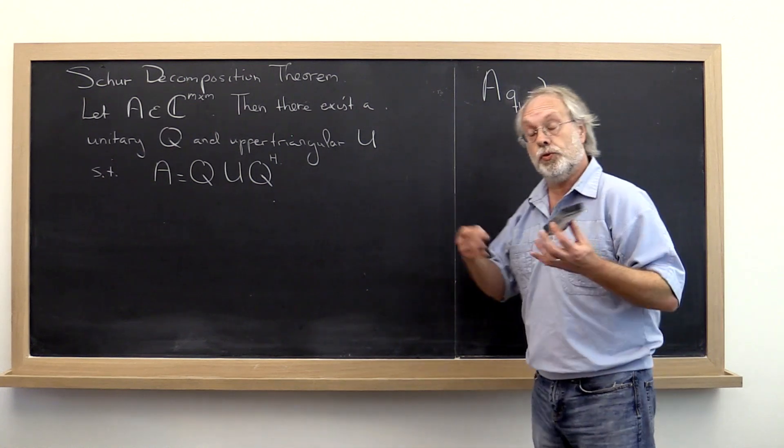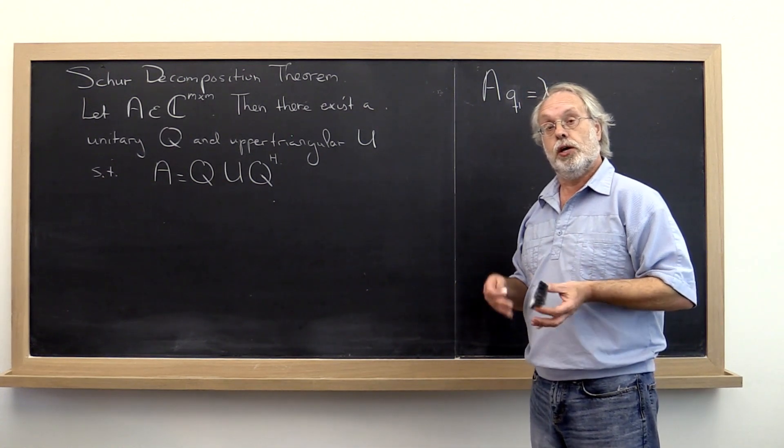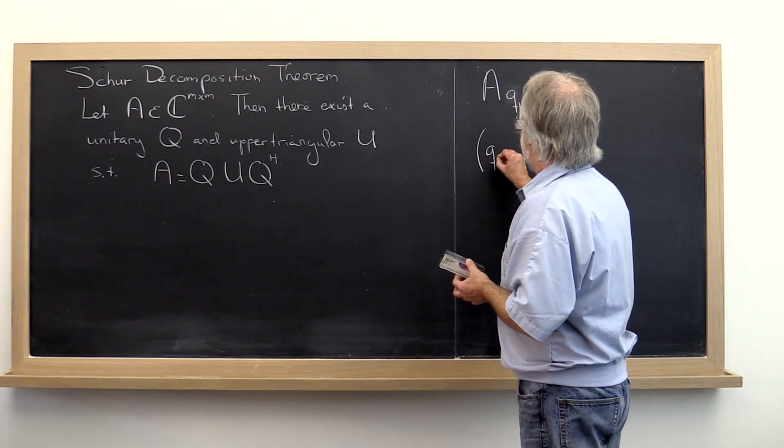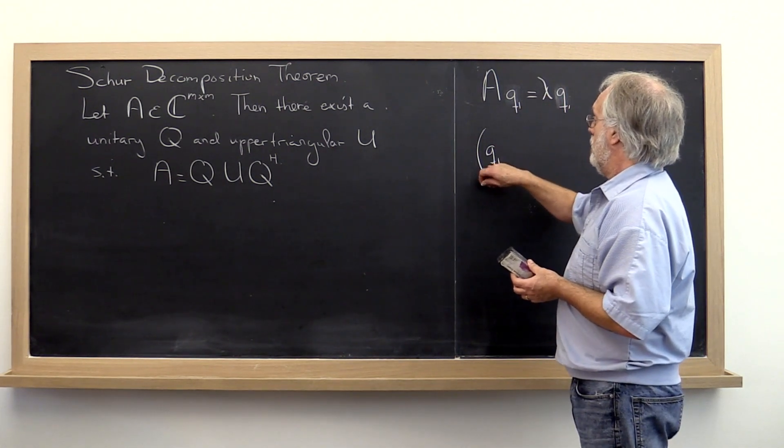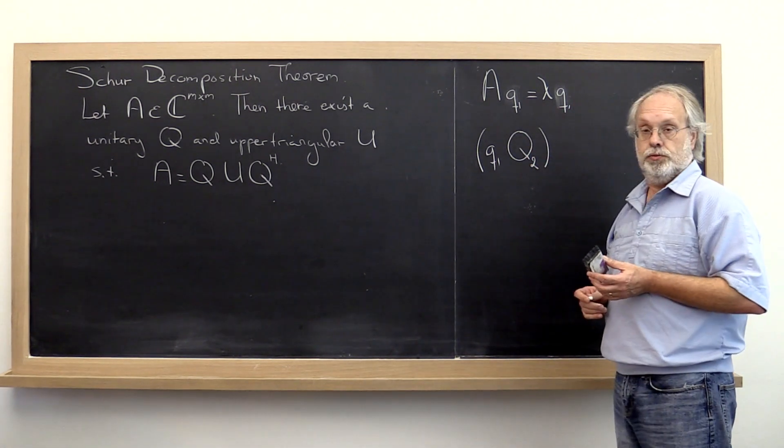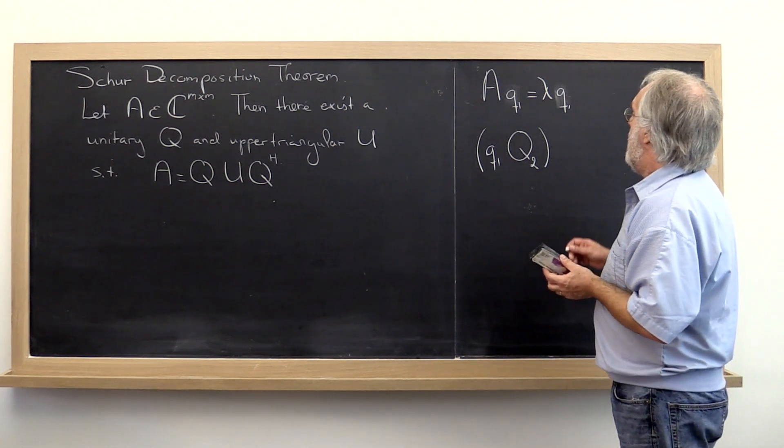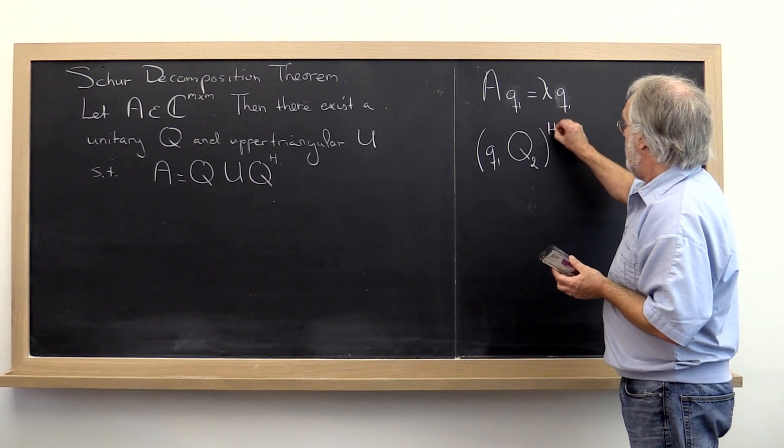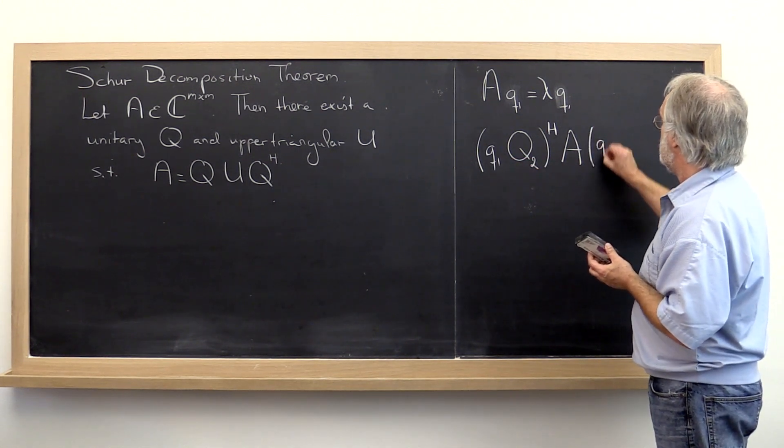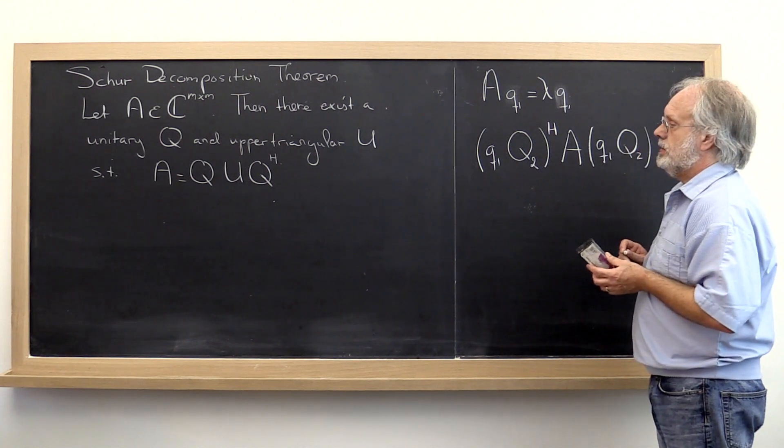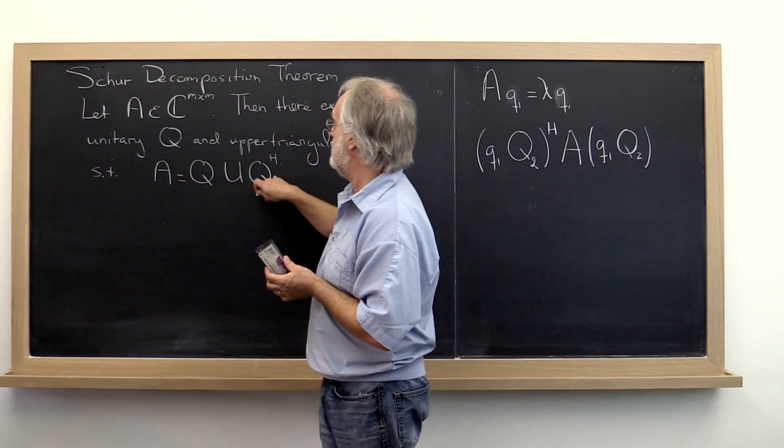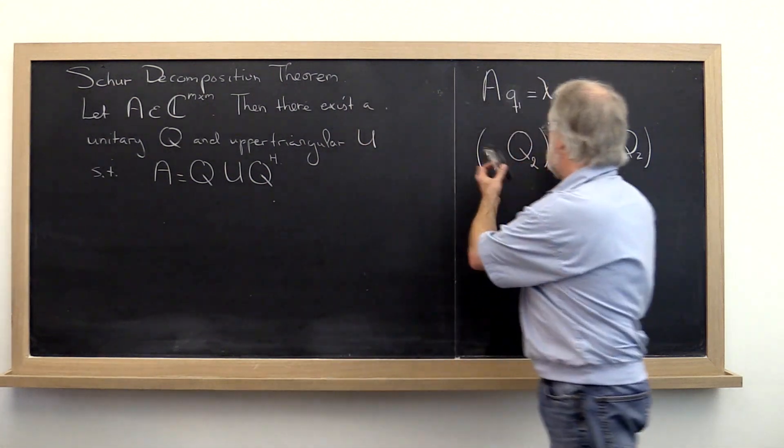Now what we can then do is do exactly the kind of trick that we did when we talked about the singular value decomposition. And we can take that vector q, make it the first column in a unitary matrix where we will call the rest of that matrix q2. Now if we hit matrix A on the left with the Hermitian transpose of that matrix and on the right with the matrix itself, that's sort of like what we want to do here except that we bring q Hermitian transpose to this side and q to that side. So this is in the right direction.